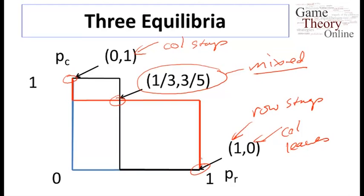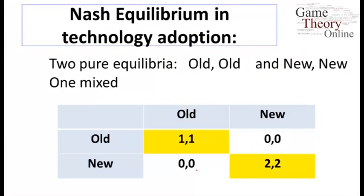This technique of drawing best response correspondences is a bit special — in two-by-two games it's quite easy, but in higher dimensions it becomes more difficult. Conceptually, it helps us understand the structure of equilibria. In this game, the equilibria slope downward in the sense that it's an anti-coordination game: one player should stay while the other leaves, or vice versa.